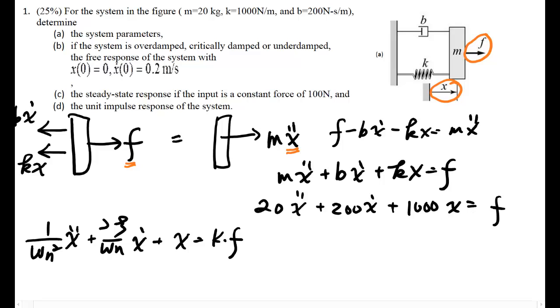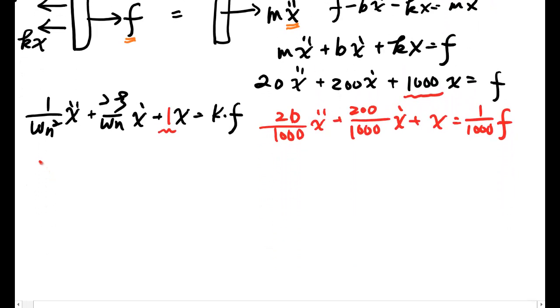Make sure we need to put this coefficient to be 1 right here. So divide by 100. In other words, 1 over omega n squared should be 50, 2 zeta omega n should be 210, and K should be 1000.